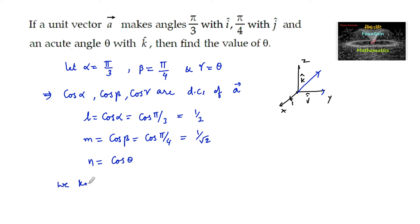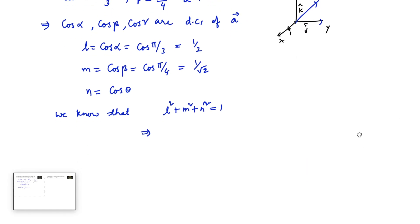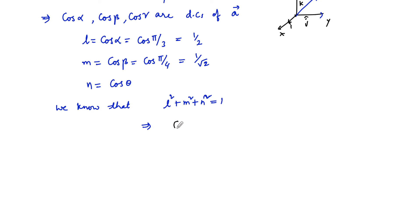We know that the relation between the direction cosines of a vector: L² + M² + N² = 1. Which implies that (1/2)² + (1/√2)² + cos²θ = 1. Or we can write 1/4 + 1/2 + cos²θ = 1. We can also write cos²θ = 1 - 1/4 - 1/2.